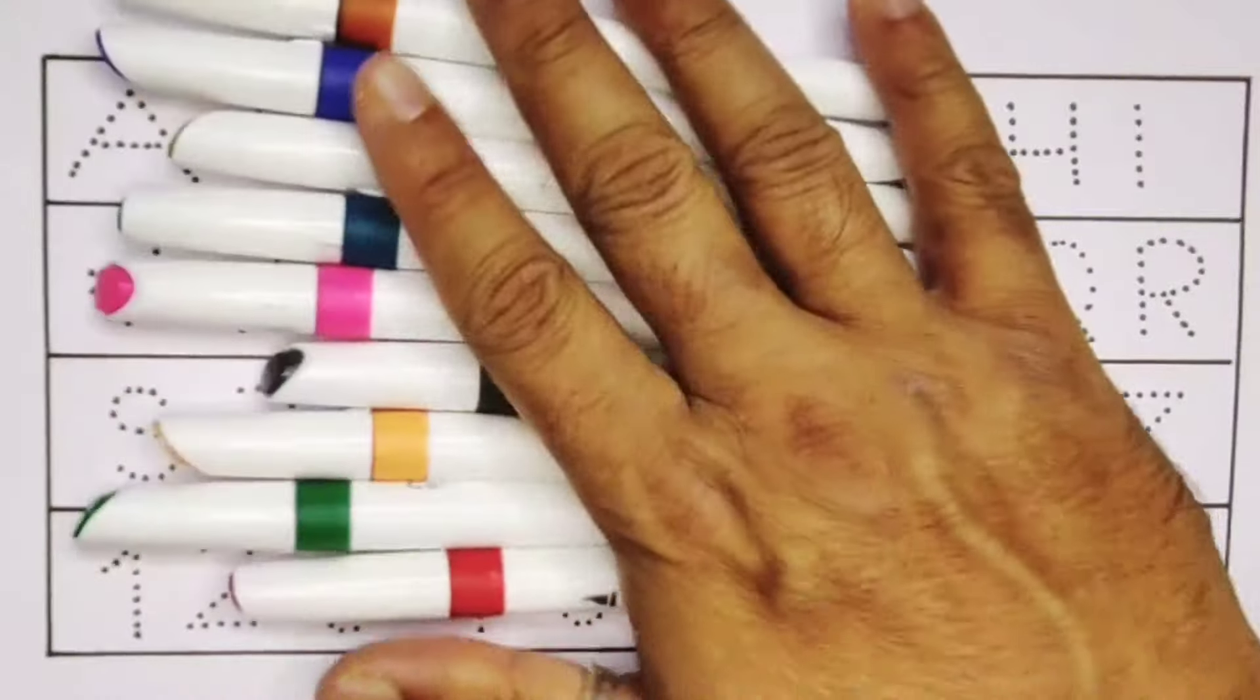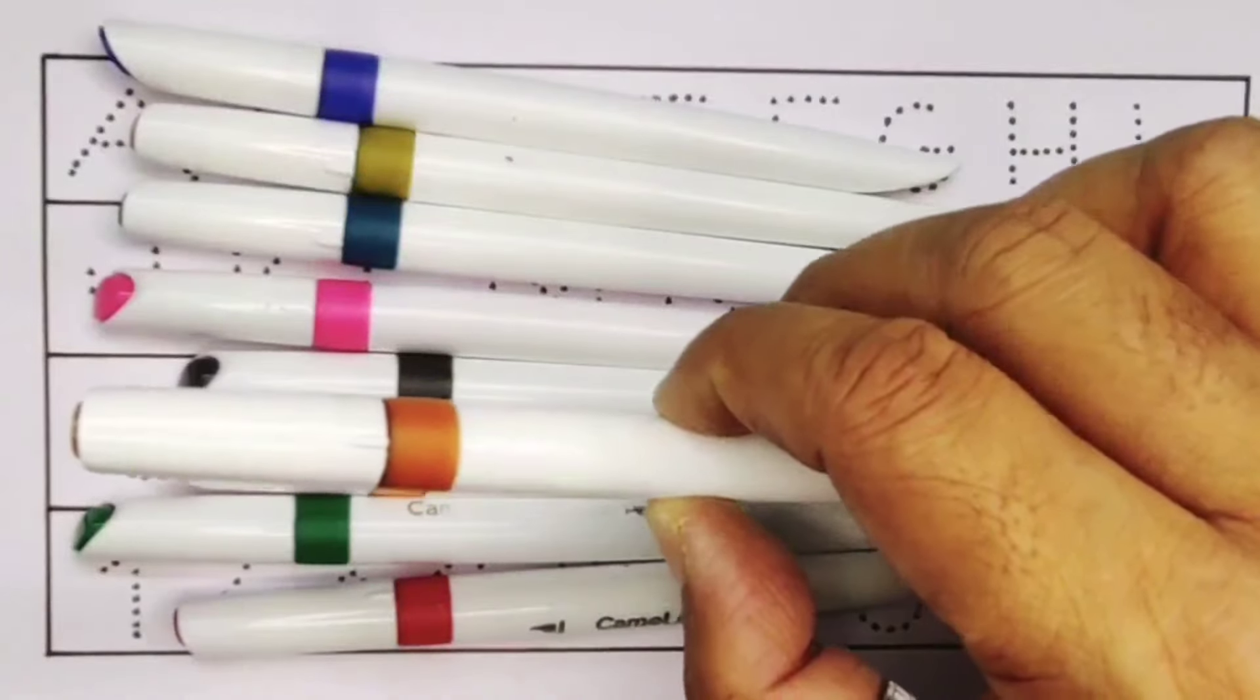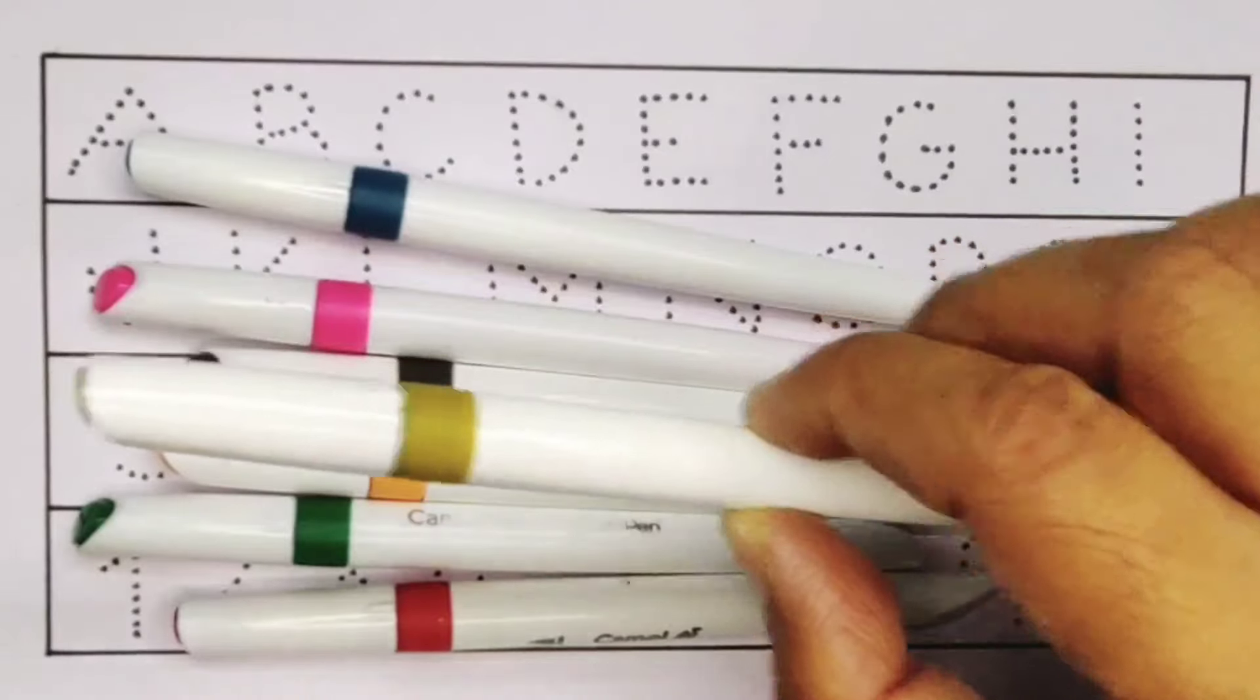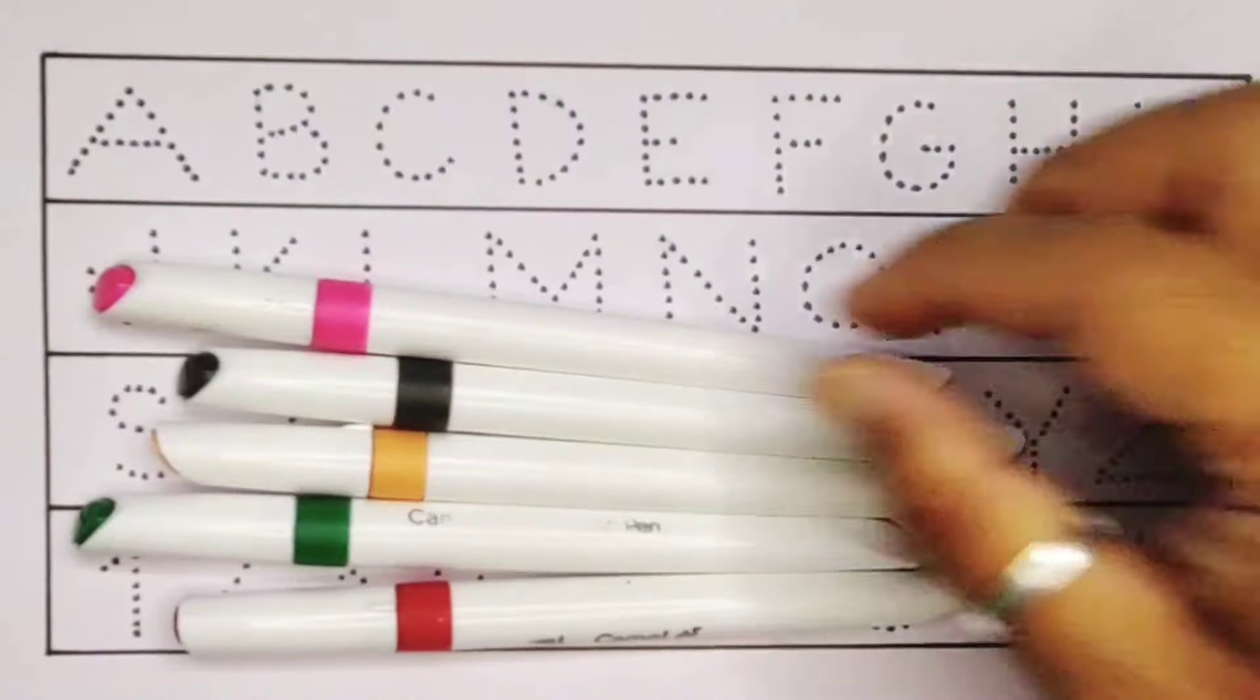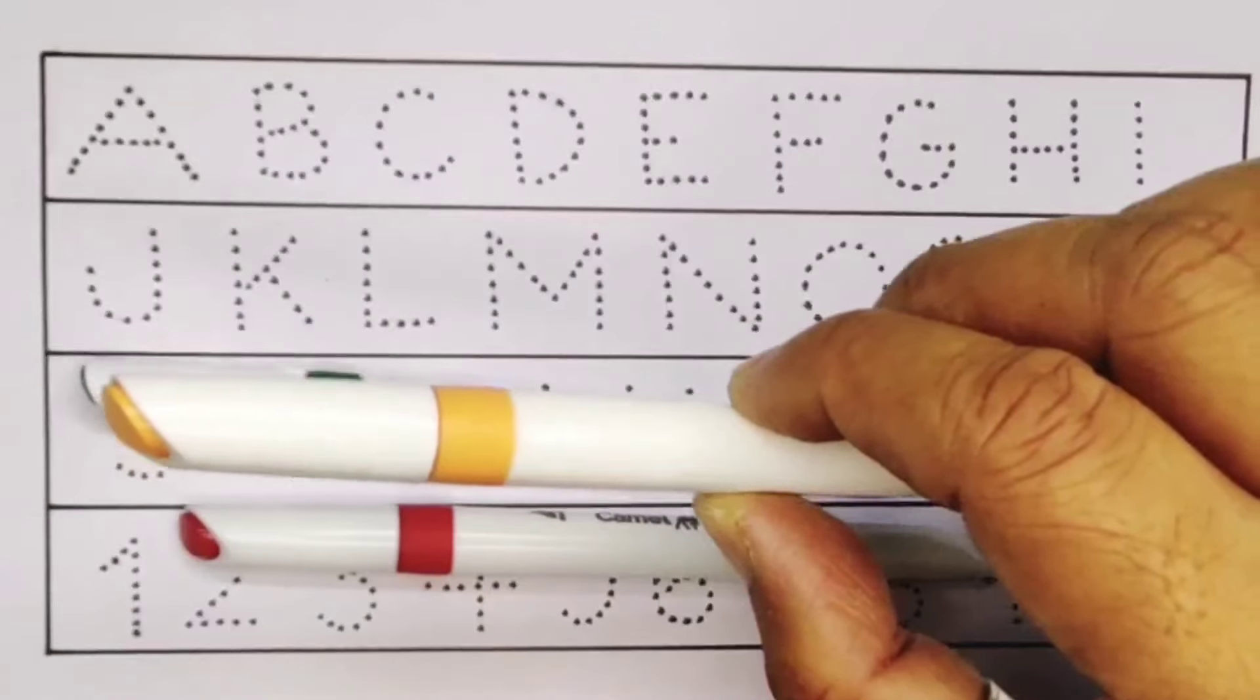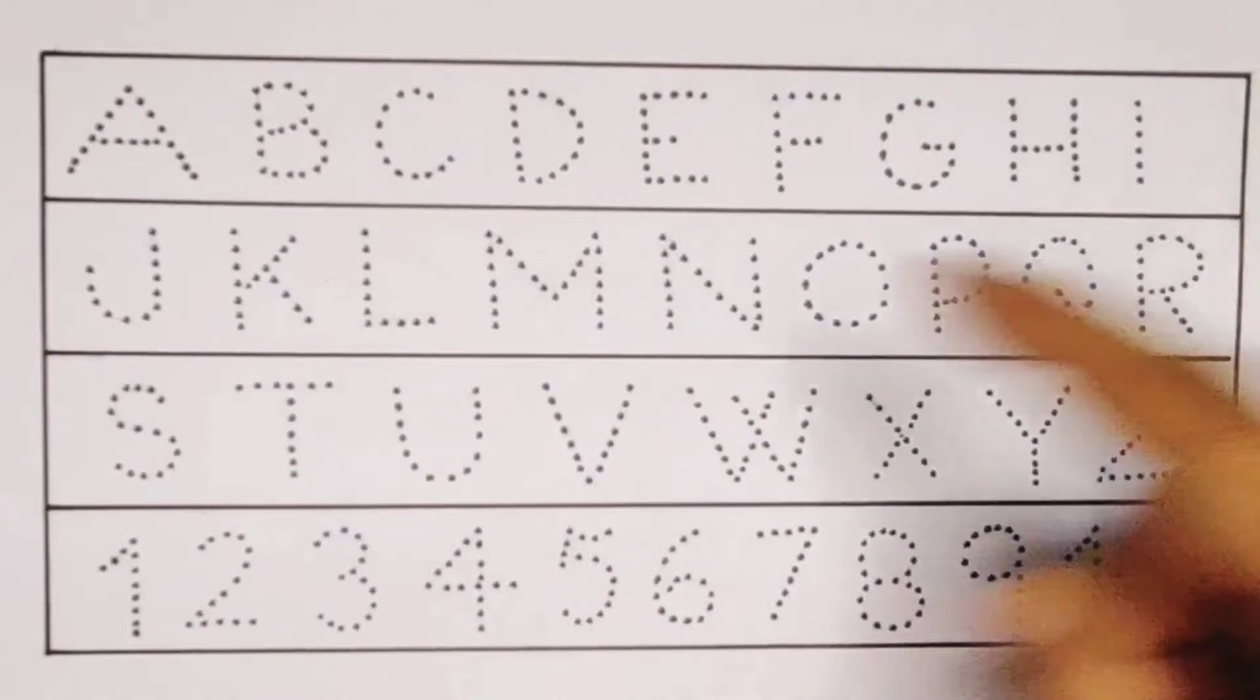Hello kids, welcome to my new video. First we are going to learn the colors name: brown color, purple color, olive color, sea green color, pink color, black color, orange color, green color, and red color. Now let's learn the alphabet A to Z and numbers counting 1 to 10.